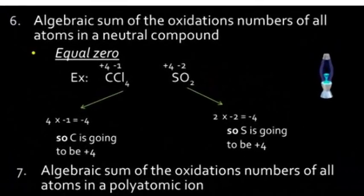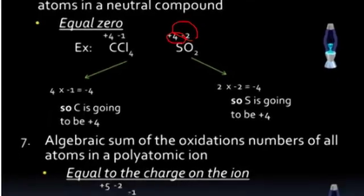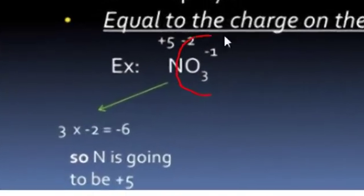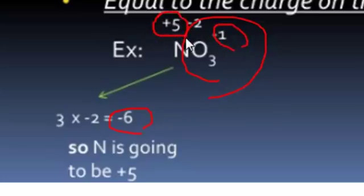The algebraic sum of oxidation numbers is always zero for a neutral compound. In carbon tetrachloride (CCl₄), carbon is plus four and each chlorine is minus one — sum is zero. In sulfur dioxide (SO₂), oxygen is minus two; two oxygens give negative four, so sulfur is plus four. In nitrate (NO₃⁻), three oxygens at minus two give minus six; to equal negative one, nitrogen must be plus five.